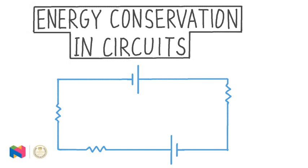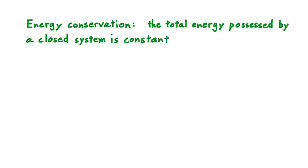In this video, our topic is energy conservation in circuits. The principle of energy conservation applies to all physical systems, and in this lesson we're going to learn two laws for electrical circuits that describe how energy is conserved in these cases. Let's remind ourselves that energy conservation refers to the idea that the total energy possessed by a closed system is constant, where a closed system is some collection of objects where energy is neither added nor taken away.